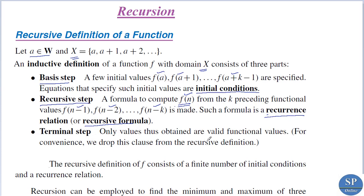The third part is the terminal step: the valid functional values are those values of f obtained from this formula. For convenience, we can drop the terminal step from the recursive definition. So the recursive definition of f consists of a finite number of initial conditions and a recursive relation.